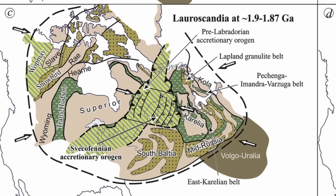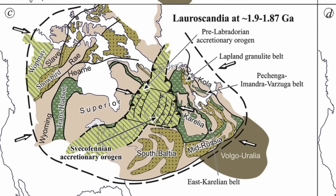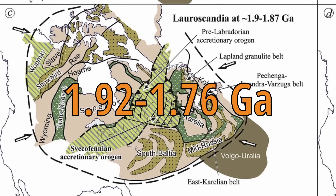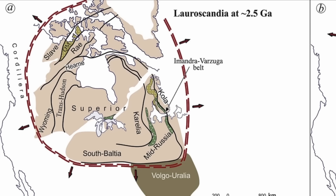The first step in creating these ring features is an uplift known as the Svecofennian Orogeny. This orogeny took place all the way back 1.92 to 1.76 billion years ago — a very ancient orogeny. Before the Svecofennian Orogeny took place, we had the supercontinent of Loroscandia, which was, as the name would suggest, a combination of parts of Laurentia,